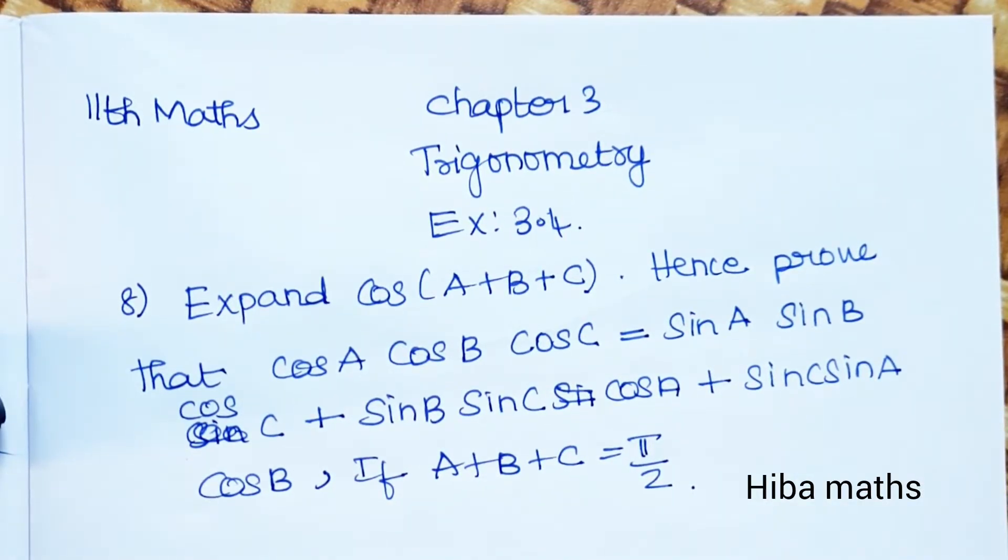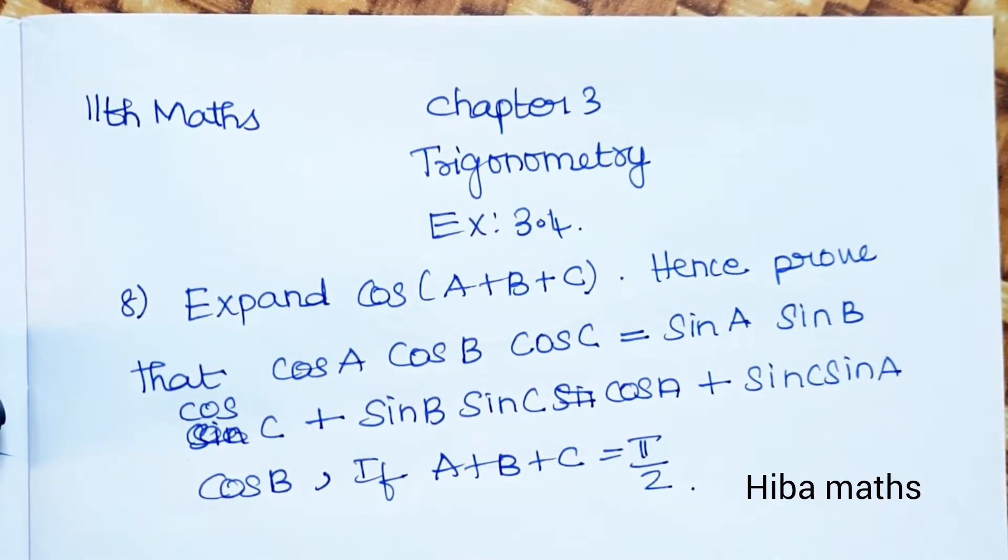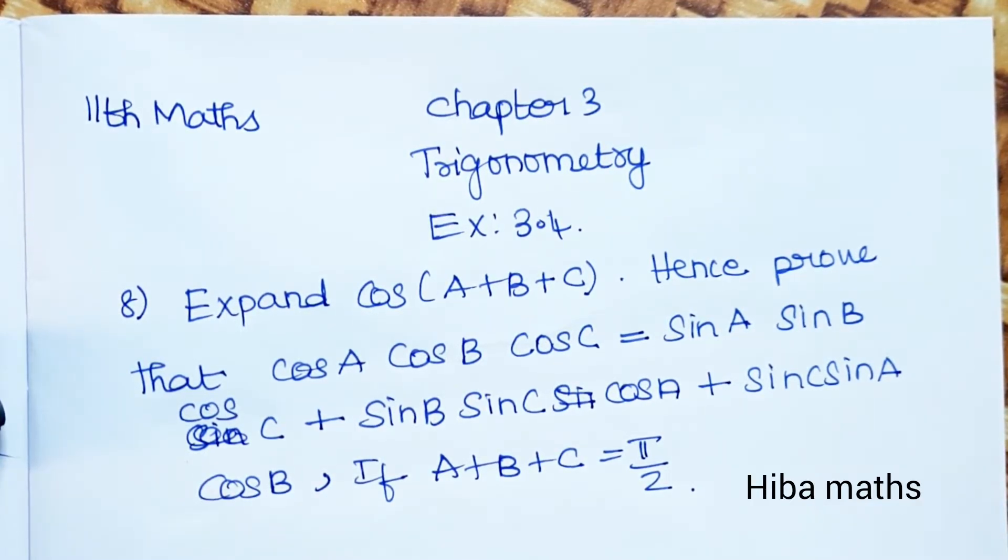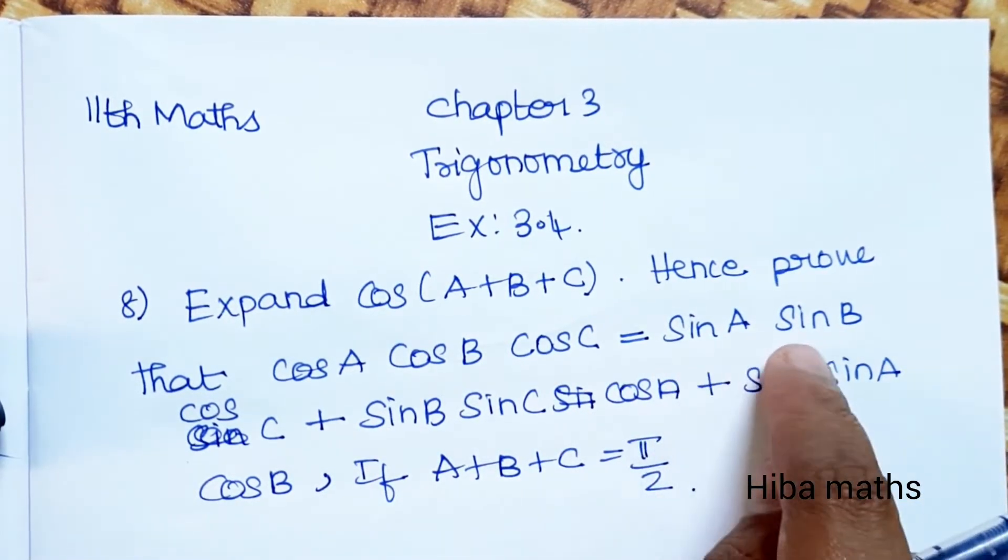Hello students, welcome to Hiba Maths, 11th standard, chapter 3 trigonometry, exercise 3.4, question 8. Expand cos(A+B+C). Hence prove that cos A cos B cos C is equal to sin A sin B cos C plus sin B sin C cos A.